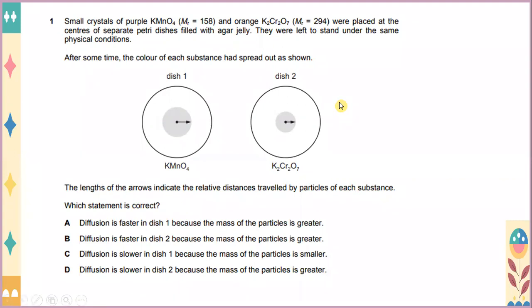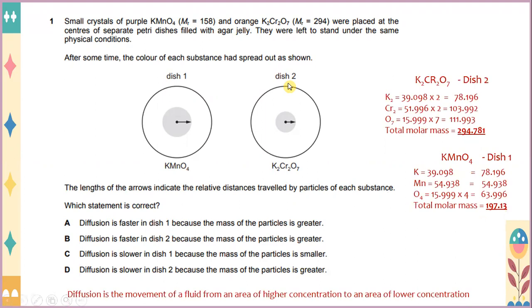Small crystals of purple KMnO4 and orange K2Cr2O7 were placed at the centers of separate petri dishes filled with agar jelly. They were left to stand under the same physical conditions. After some time, the color of each substance has spread out as shown. The length of the arrows indicates the relative distances traveled by particles of each substance.